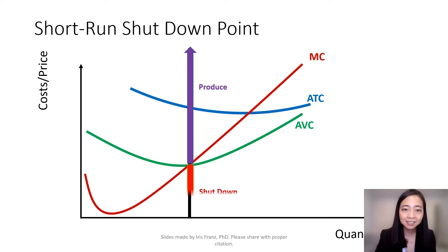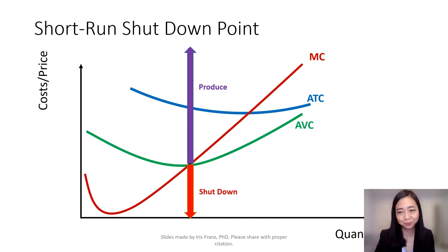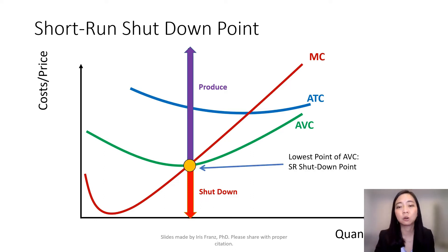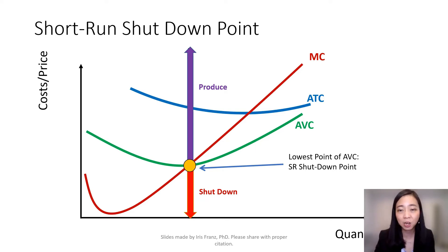Whenever the price is lower than average variable cost, we shut down. And therefore, you can say that the lowest point of average variable cost will be our short run shut down point. Whenever the price falls below this point, we are going to shut down.